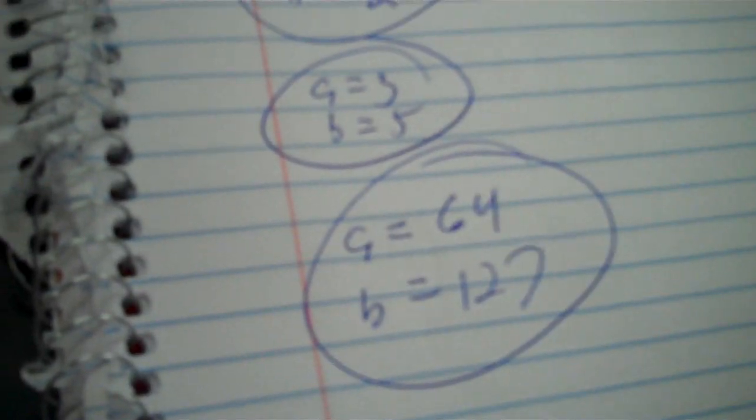127, 64ths times 10 and 9 tenths means that when 10 and 9 tenths is divided into 64 equal parts, 127 are taken.